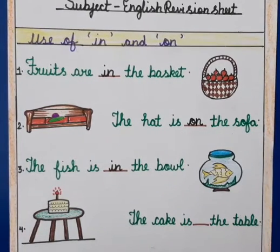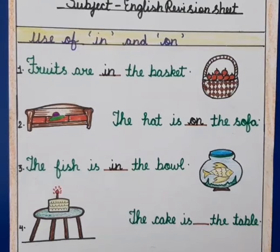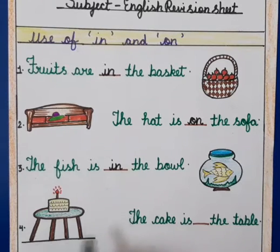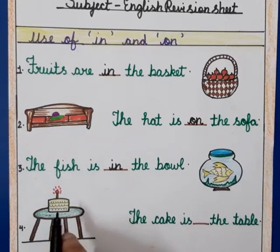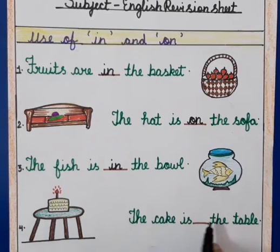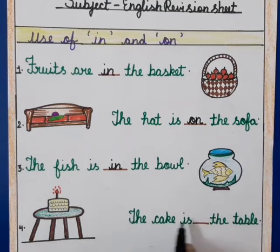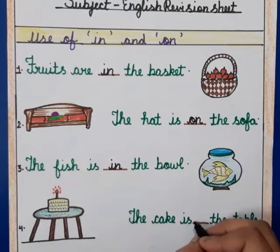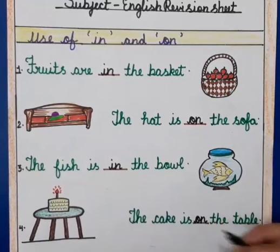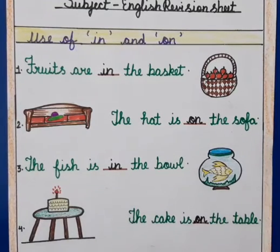Now the next sentence is: as you can see a table and a cake. 'The cake is on the table.' So we will write 'O' and 'on' here. The cake is on the table.